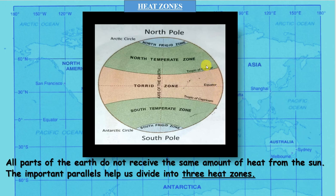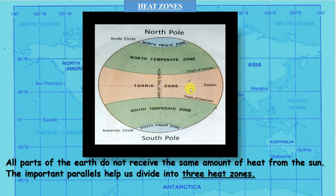All the places located between the tropic of cancer and the tropic of capricorn experience vertical rays from the sun at least twice a year. This region receives the maximum amount of heat and is called the torrid zone. The word 'torrid' means hot.